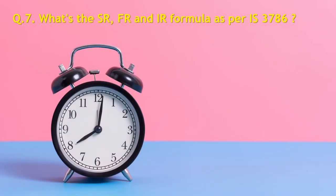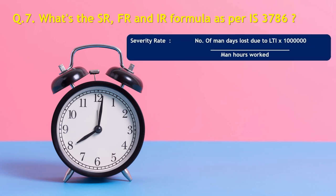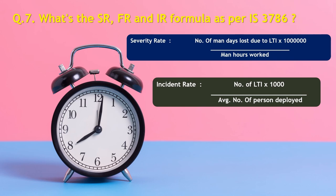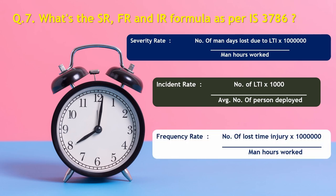Question number 7: What is the severity rate, frequency rate, and incident rate formula as per IS 3786? The severity rate calculation for an incident as per IS 3786 is: number of man-days lost due to LTI multiplied by 1 million divided by man-hours worked. Incident rate formula is: number of LTI multiplied by 1,000 divided by average number of persons deployed. Frequency rate formula is: number of LTI multiplied by 1 million divided by man-hours worked.